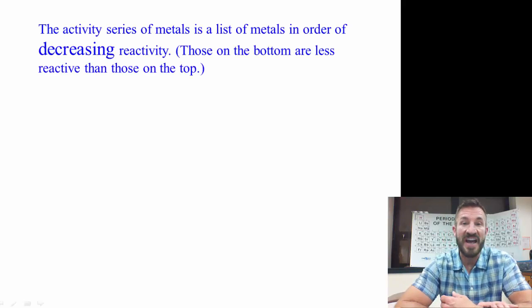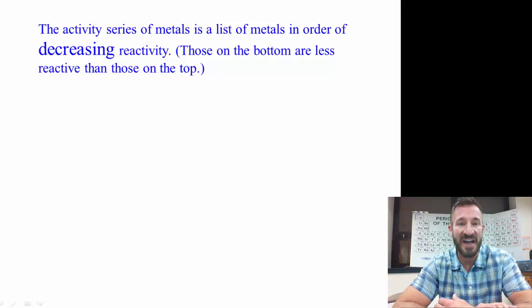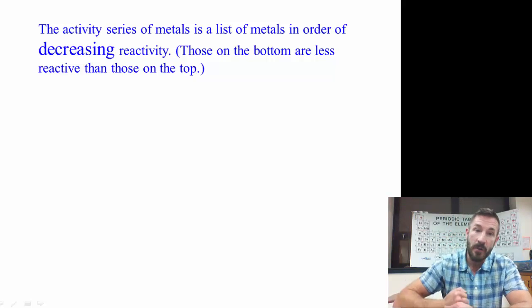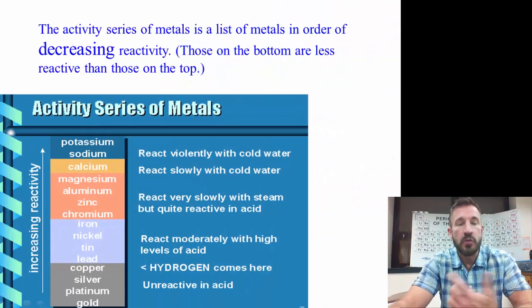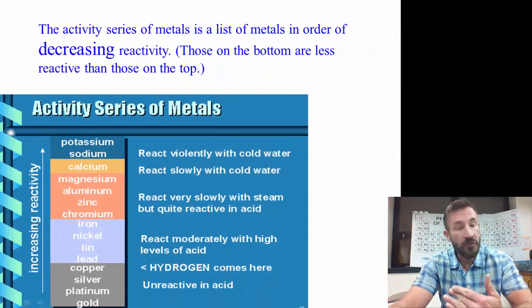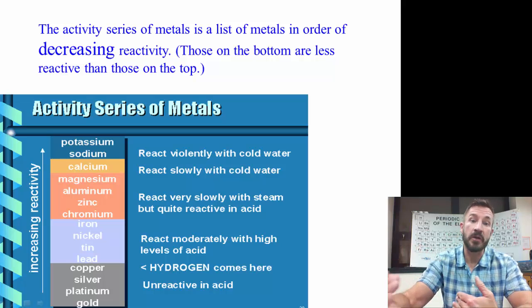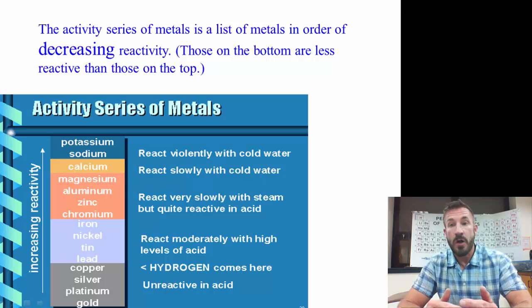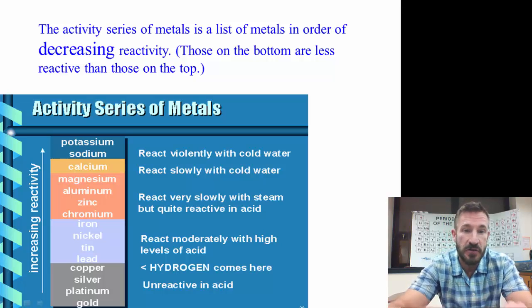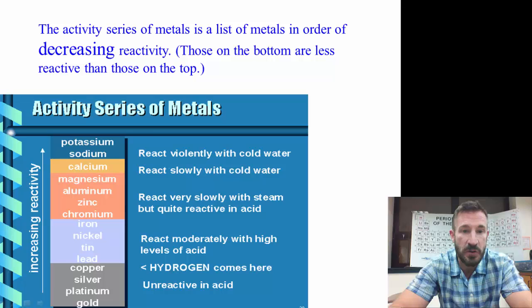What we're going to use to do this is something called the activity series. It is a list of metals in order for decreasing reactivity. Those at the bottom are less reactive than those at the top. Here's one activity series. Different activity series will be bigger or smaller depending on if they put fewer or more metals in there. So this activity series, the most active metal we see in this one is potassium. So that's listed at the top.